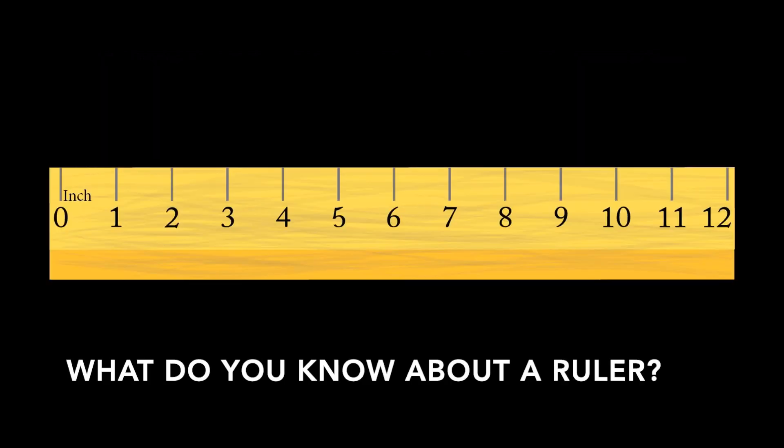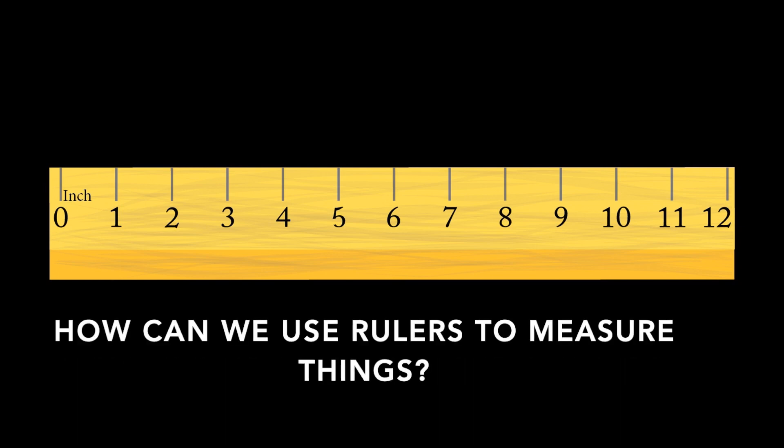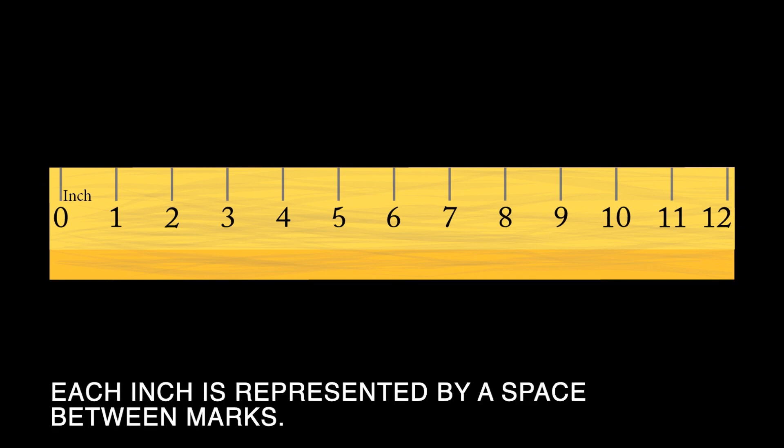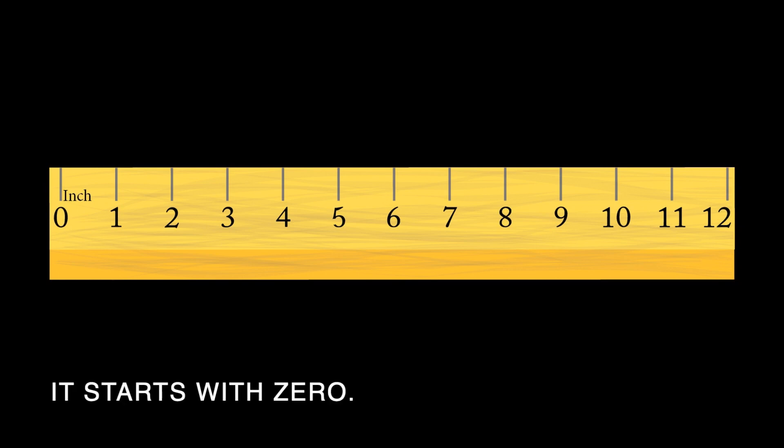What do you know about a ruler? How can we use rulers to measure things? A ruler represents 12 inches. Each inch is represented by a space between marks. It starts with zero, and inches are used to measure length.